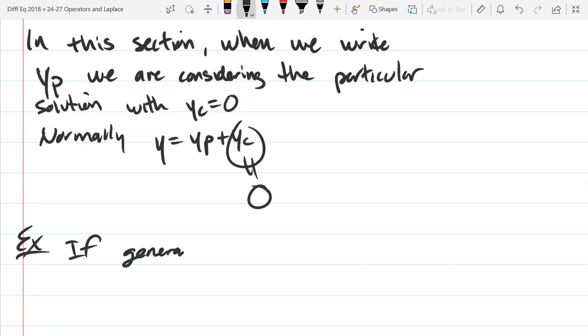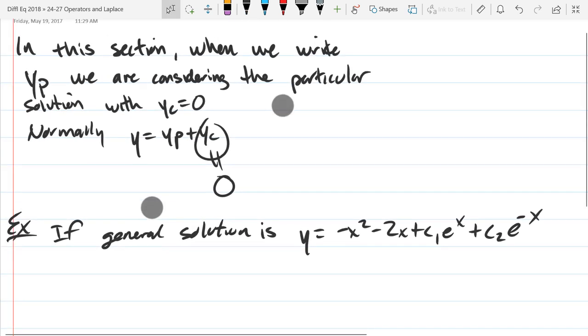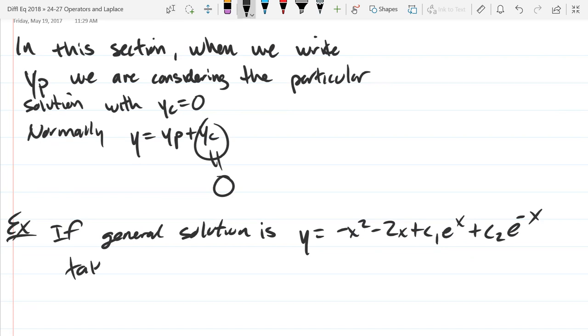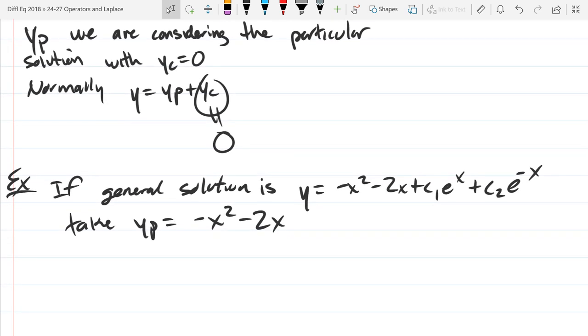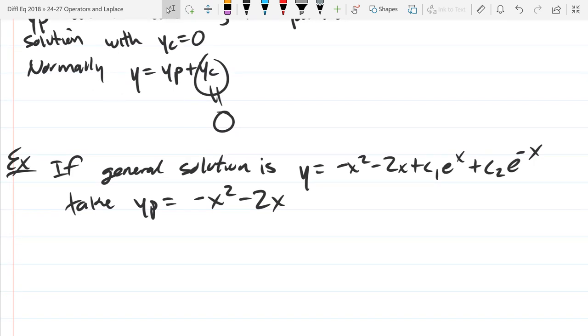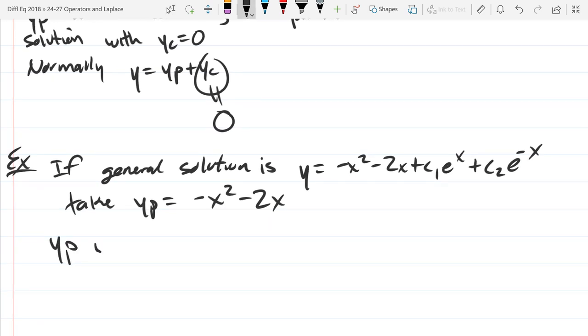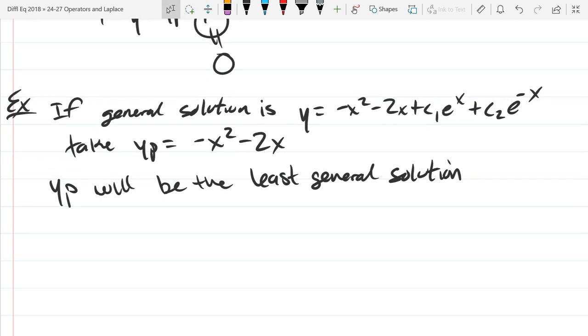So if the general solution is y equals negative x squared minus 2x plus c1 e^x plus c2 e^(-x), what we're going to do is throw away the constant parts. So we're going to take yp, the particular to be, discarding the constants. So we're going to throw away those constants right there. So basically thinking of yp as the least general solution.